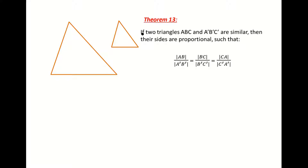Like all of our proofs to our theorems, we are going to write down what we are given, what we want to prove, then our constructions, followed by our proof. So let's write down what we're given first of all.